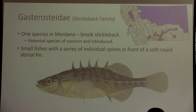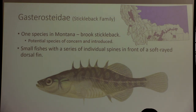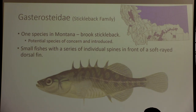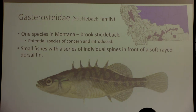The stickleback family — they're super unique-looking fish which helps with ID — a species of potential concern but also introduced in some places. The arctic grayling is a salmonid species with that beautiful sailfin, very distinct. They are both a species of concern because they're decreasing, and an introduced species in some areas due to bucket biology — people wanting to introduce them into lakes where they don't belong because they're a popular sports fish.